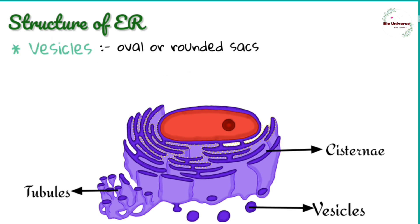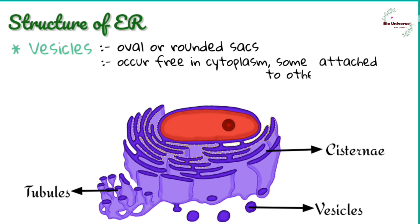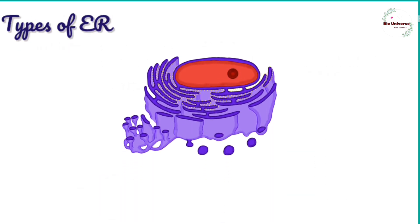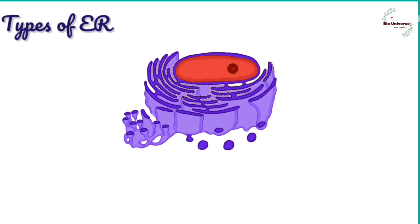Vesicles: they are oval or rounded sacs of the endoplasmic reticulum. Many of them occur free in the cytoplasm, while some are found attached to other components of the endoplasmic reticulum. They are 25 to 500 nanometers in diameter.